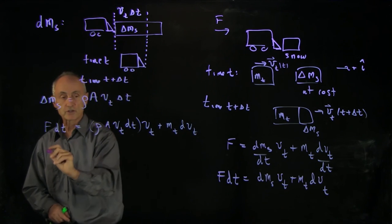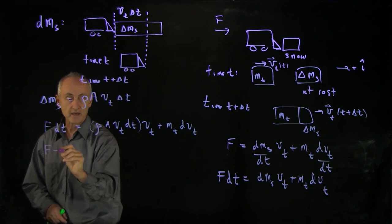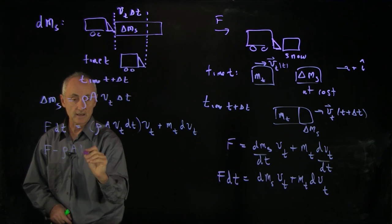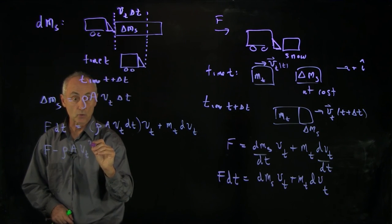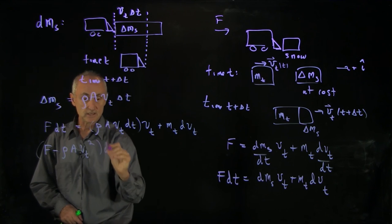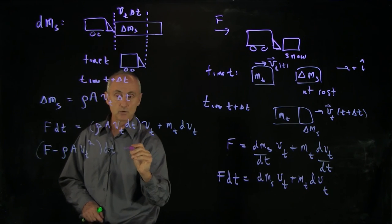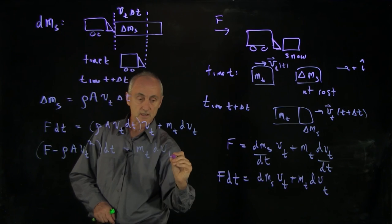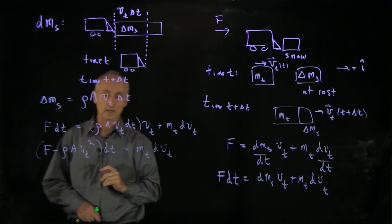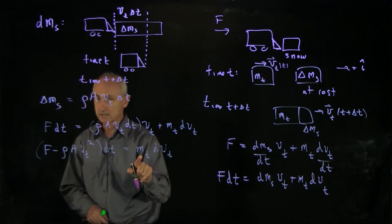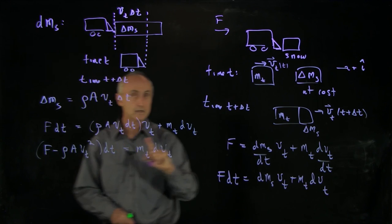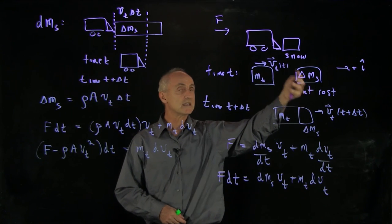Now, we can bring this term over to the other side. And so we have f minus rho a vt squared times dt equals mass of the truck times dvt. And the mass of the truck in this case is fixed. Why?